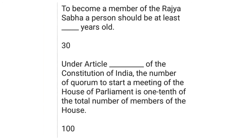To become a member of the Rajya Sabha, a person should be at least 30 years old. Under Article 100 of the Indian Constitution, the quorum to start a meeting of the House of Parliament is one-tenth of the total number of members of the House.